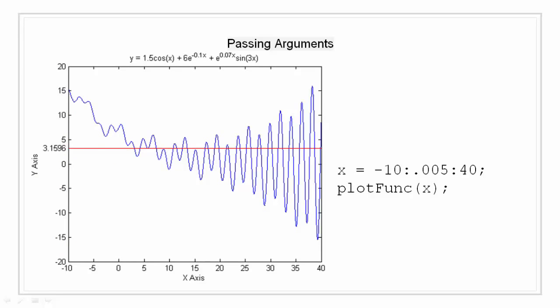This is how I call the plot function from the command line. I created a vector x and passed it as an argument to the function plotFunc. Shown on the left is the graph that is generated. So the blue line represents the data of y and the red line represents the mean of that data.